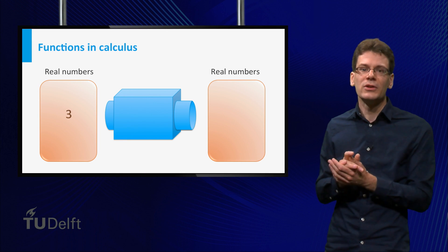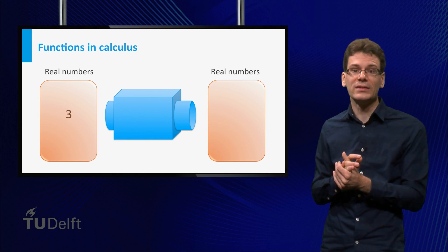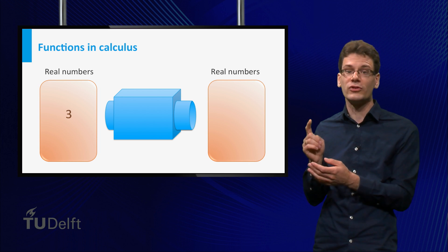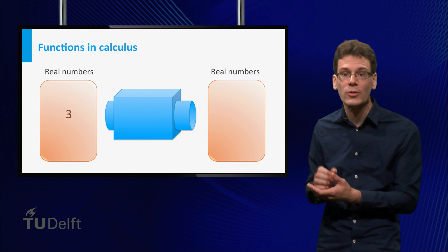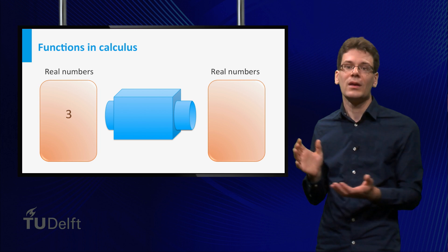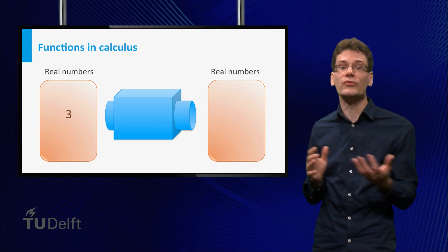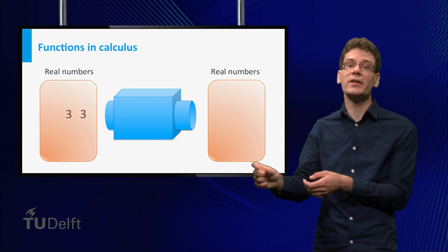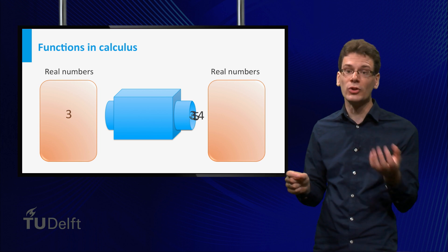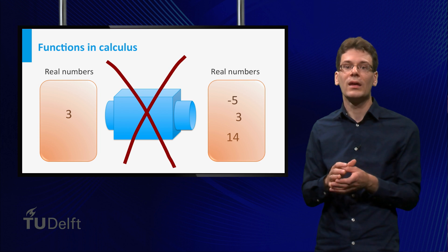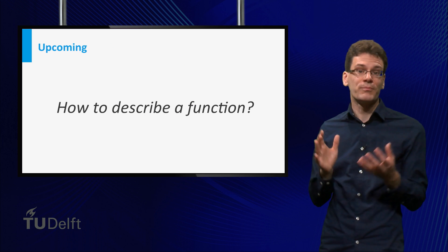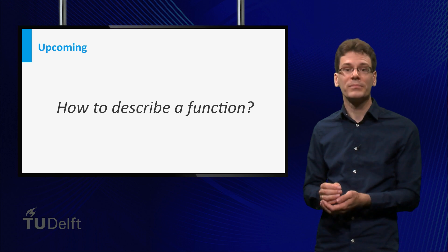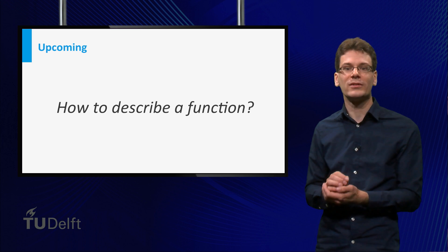To summarize, you can view a function as a machine that gives a relation between two sets. But remember, each input of a function should produce exactly one output. We have seen it in the context of actors and movies. In the context of calculus, it simply means that if you put one number in, you cannot get multiple numbers out. Now we have seen what a function is — the next natural question is how to describe a function. This will be the subject of the upcoming video.